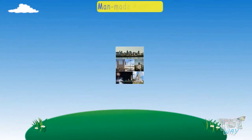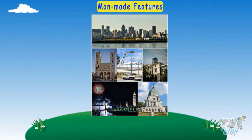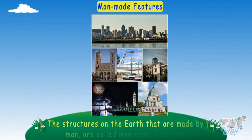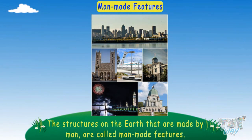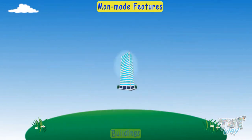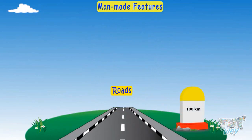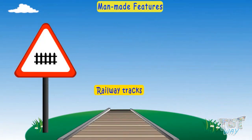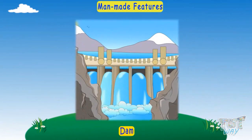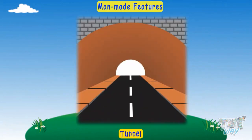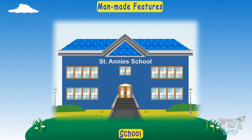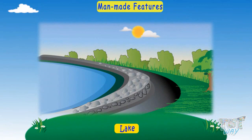Man-made features: There are many structures on Earth that are made by humans, and such features are called man-made features. Examples include buildings, roads, railway tracks, dams, tunnels, and schools.